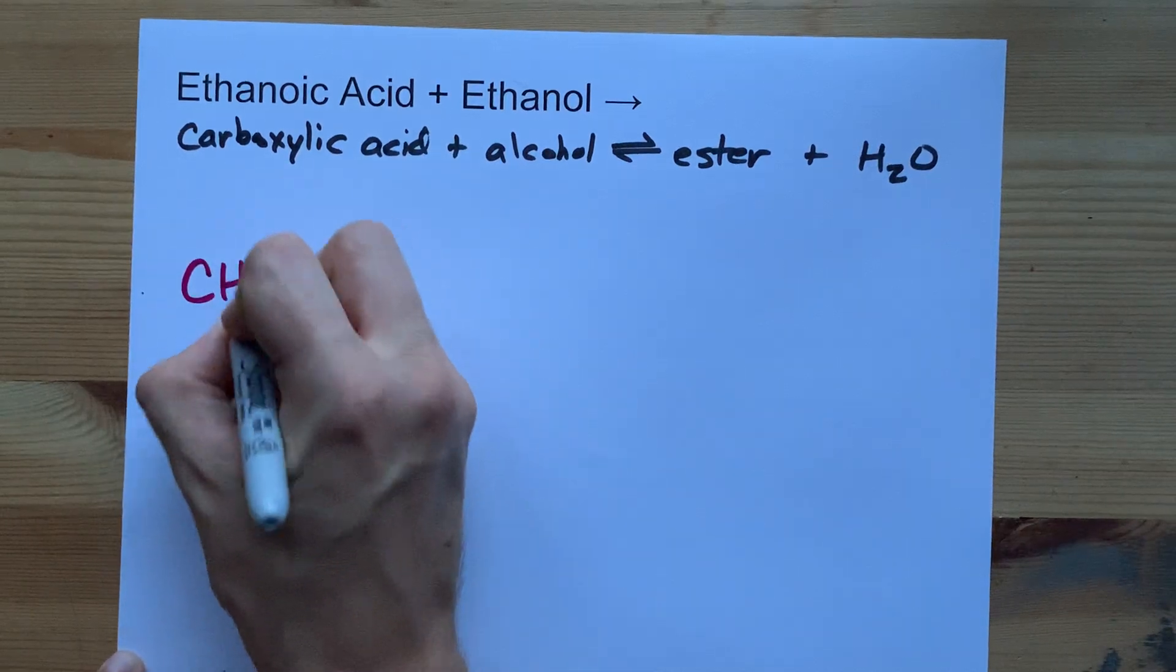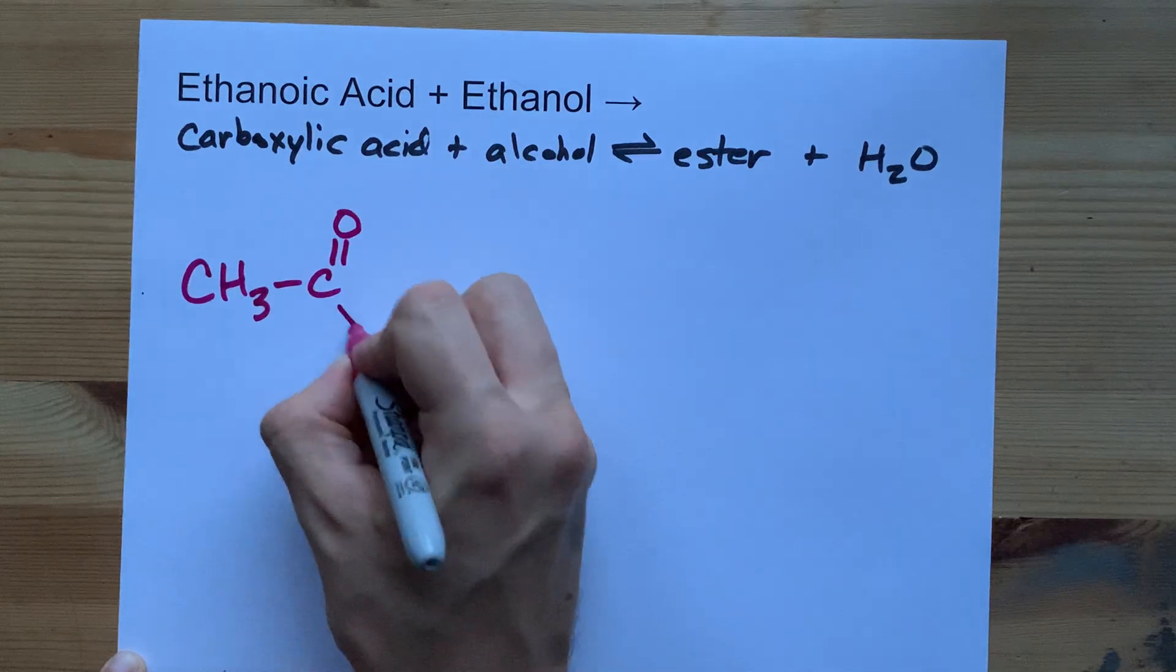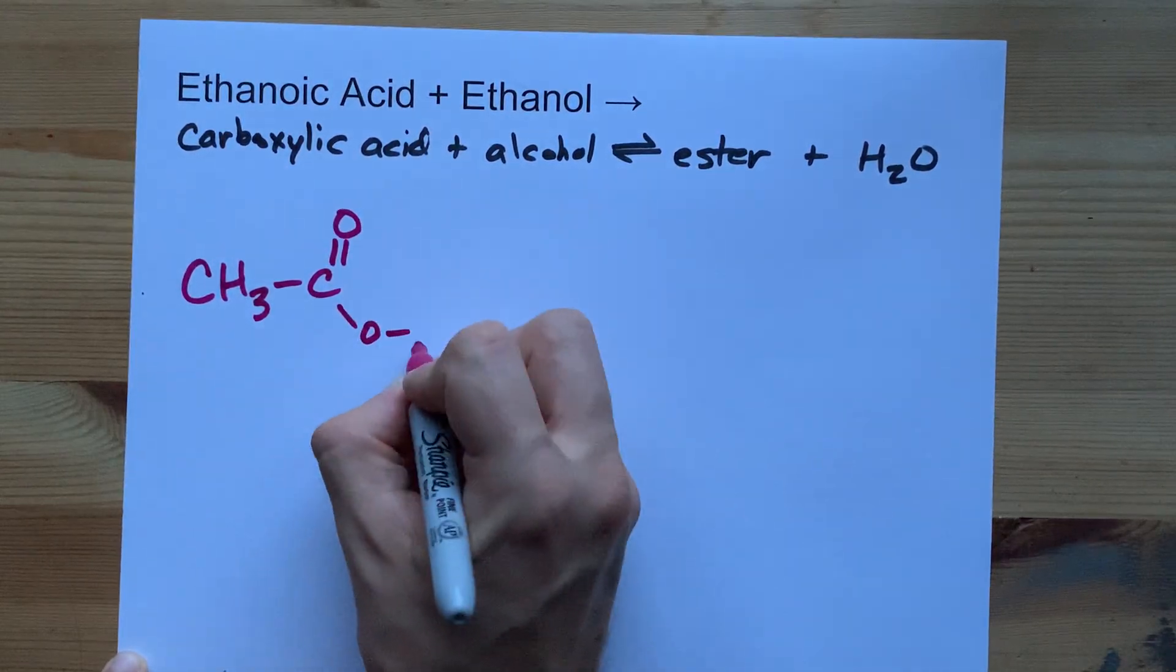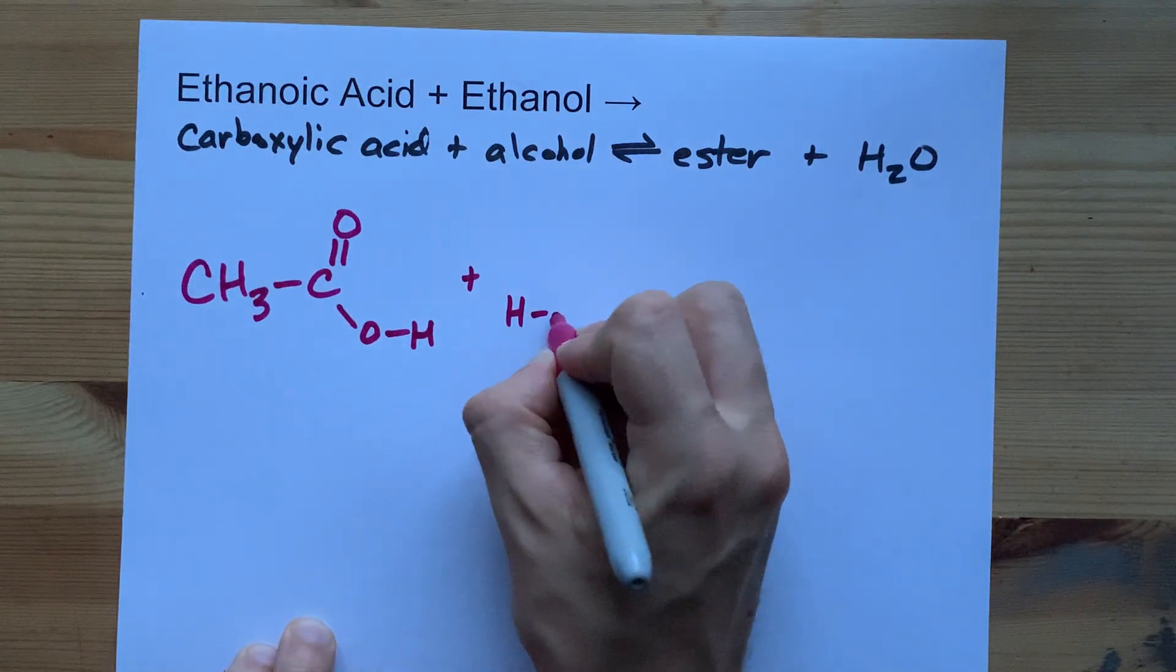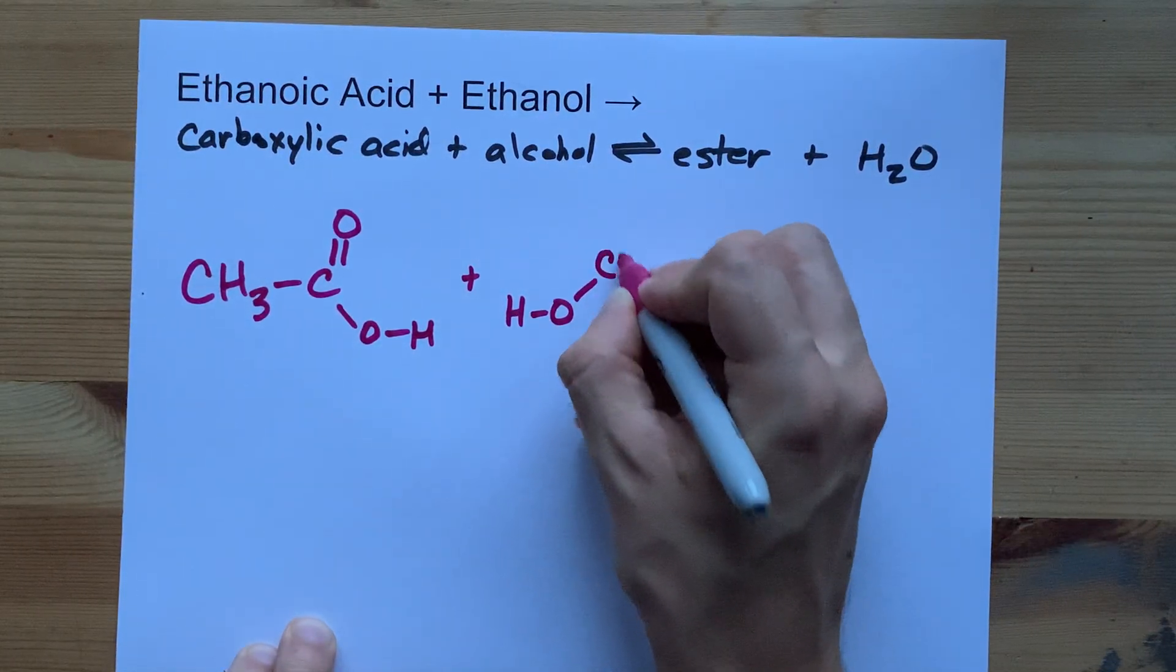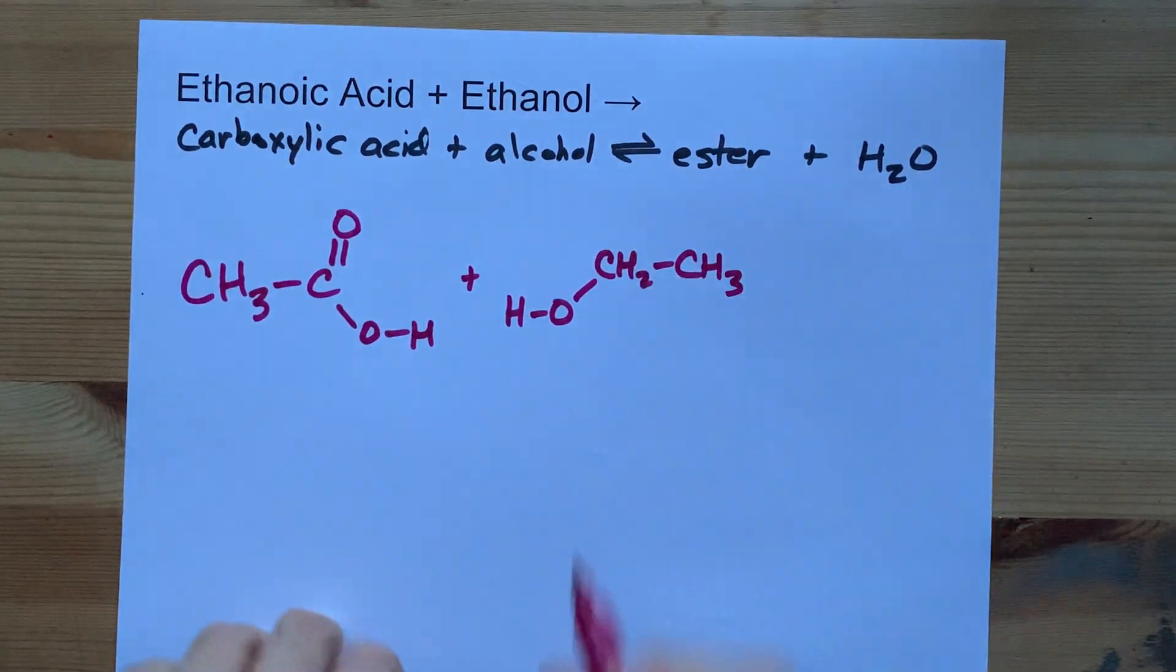Ethanoic acid is CH3C. That C is double bonded to an O and it has an OH on it. The alcohol here is an OH attached to a two carbon chain, CH2CH3. Those are your two reactants.